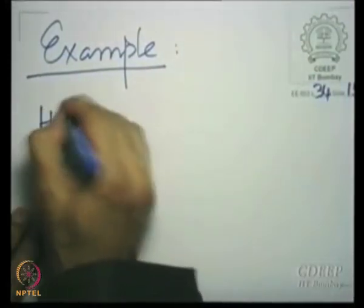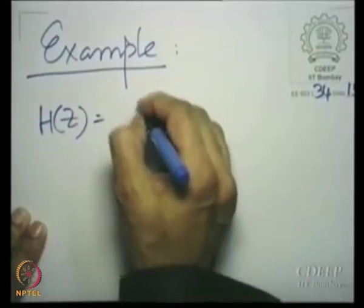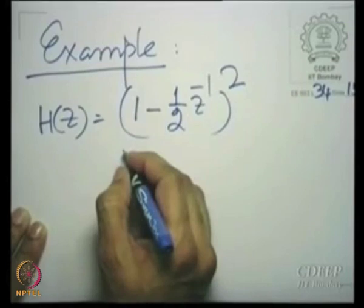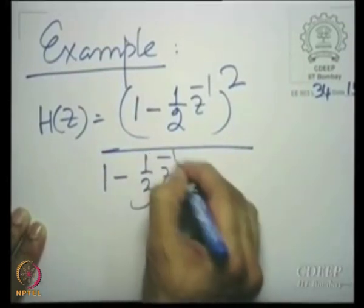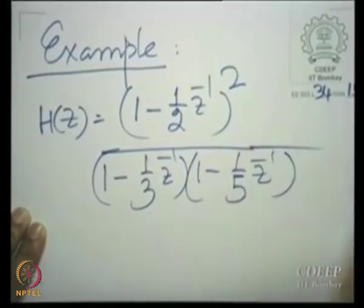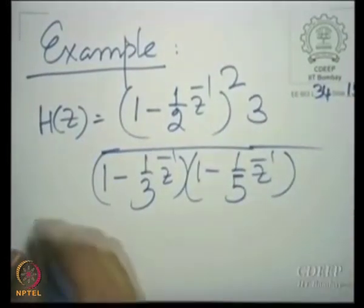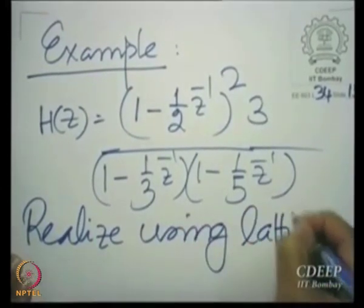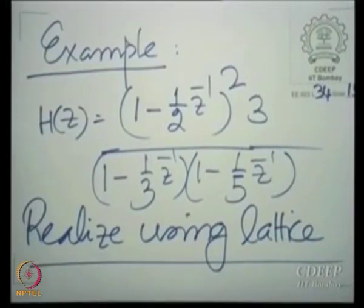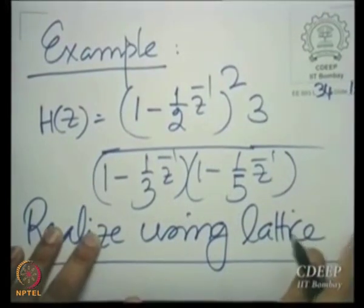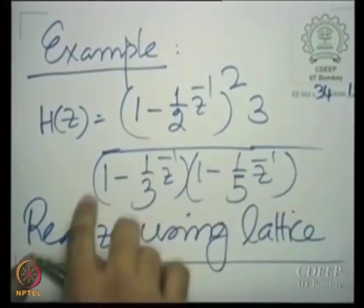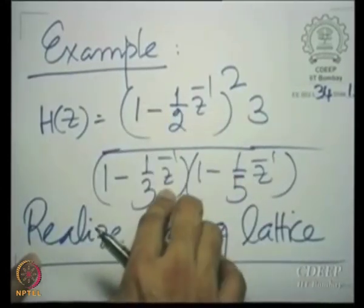Let us construct H(z) equal to (1 minus one-half z-inverse) squared, divided by (1 minus one-third z-inverse)(1 minus one-fifth z-inverse), multiplied by 3, using the lattice structure. Let us expand this, because it is not in the pole form or pole-zero form that the lattice structure can be realized — we need it explicitly as polynomials.